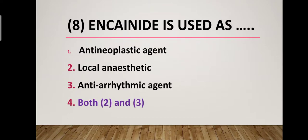Question number eight: Encainide is used as what? Option one: antineoplastic agent (anti-cancer/anti-tumor drug). Option two: local anesthetic. Option three: antiarrhythmic agent. Option four: both second and third. Correct answer is option four — both second and third. Encainide is used as both a local anesthetic and an antiarrhythmic agent.